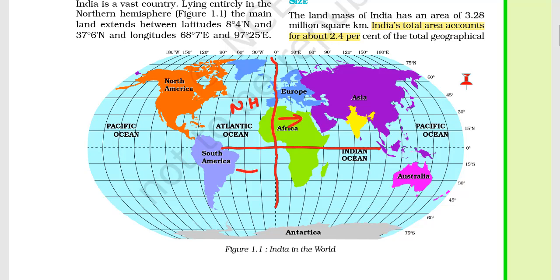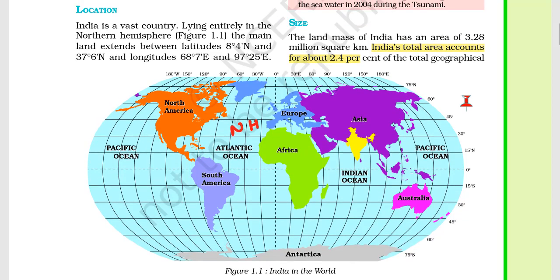If I talk about the location of India, India entirely lies in the northern hemisphere, and also in the eastern hemisphere. The land boundaries of India by latitude: the southernmost portion is 8 degrees 4 minutes north, and 37 degrees 6 minutes north is the northern portion of India.